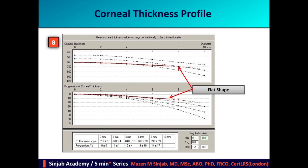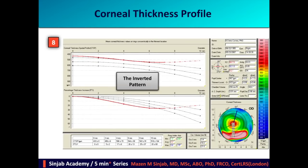The flat shape is characteristic of diseased, thickened cornea as in Fuchs and cornea guttata — a hallmark for which we should look for cornea guttata and Fuchs dystrophy. The inverted pattern is a hallmark of pellucid marginal degeneration, though not every case of pellucid marginal degeneration has this pattern.